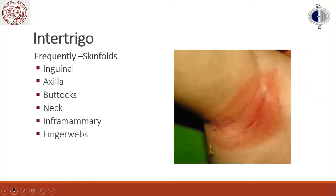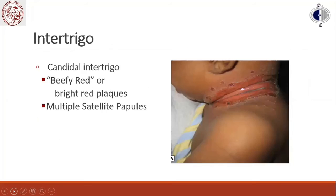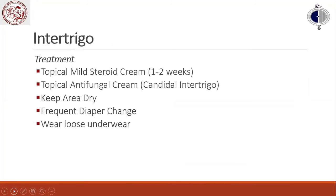Intertrigo is frequently found in skin folds. In children, watch for candidal intertrigo, which may appear bright red with multiple satellite papules. Treatment consists of topical mild steroid cream for one to two weeks, topical antifungal cream for two weeks, and keeping the area dry with frequent diaper changes and loose clothing.